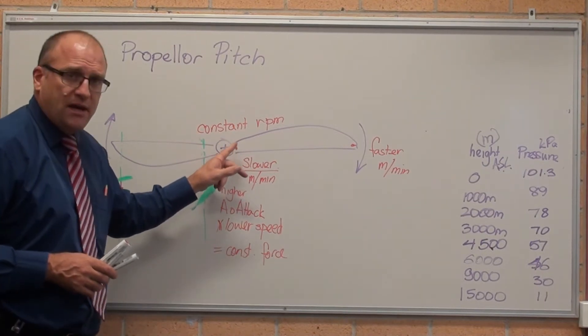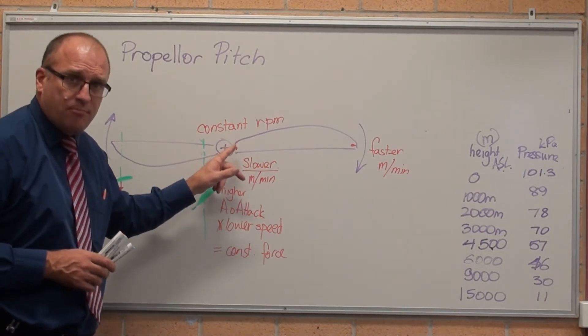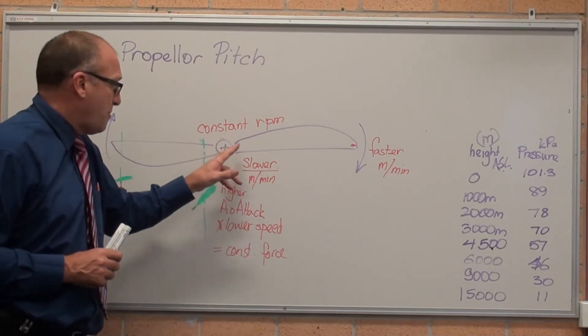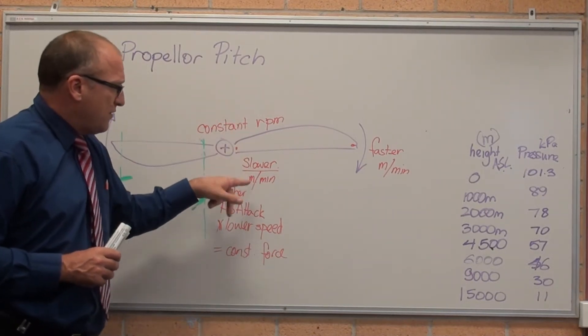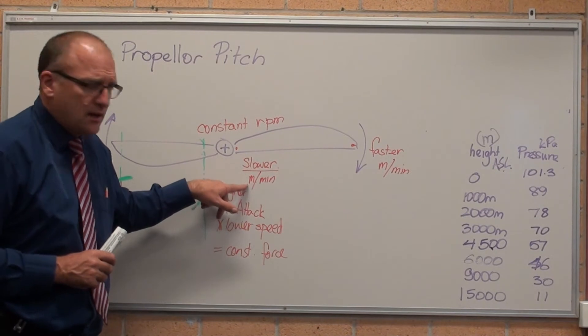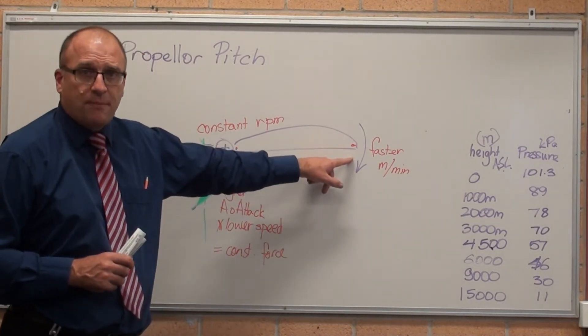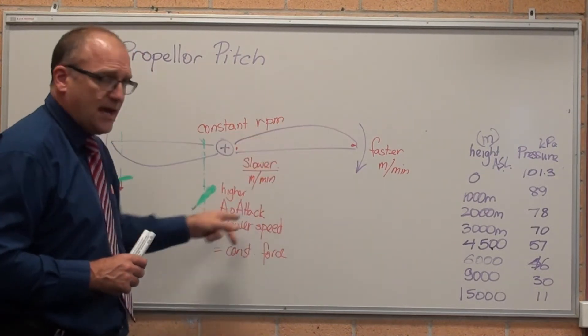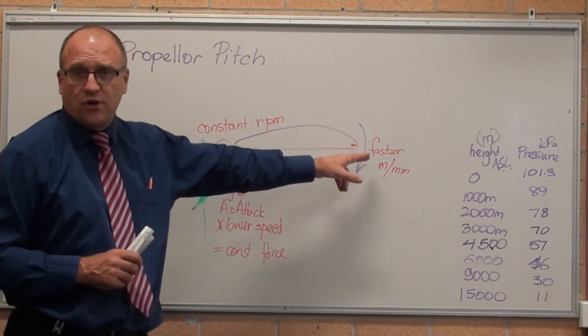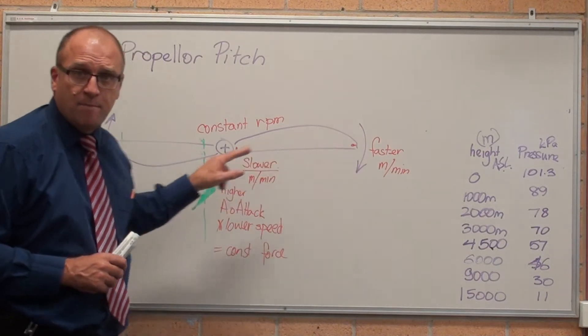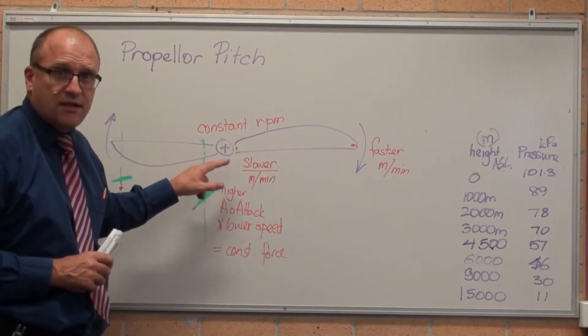Right now, right in the middle next to the propeller boss, in the centre of the propeller, that's travelling at a slower metres per minute linear speed than it is out here on the outside of the propeller. It's still travelling at the same rotational speed, but because that's further out it's travelling faster, because that's closer in it's travelling slower.